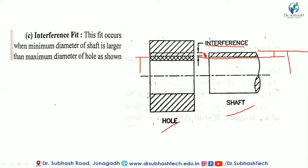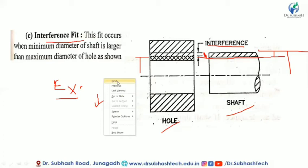When the minimum lower limit of shaft is larger than the maximum diameter of the hole, that is an interference fit. This is a permanent fitting - if there is wear on one part, the drive force differs. Examples include: shrink fit, heavy drive fit, and housing fit. These are the types of interference fit.